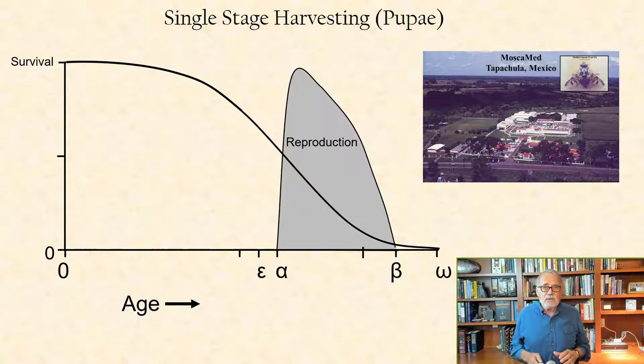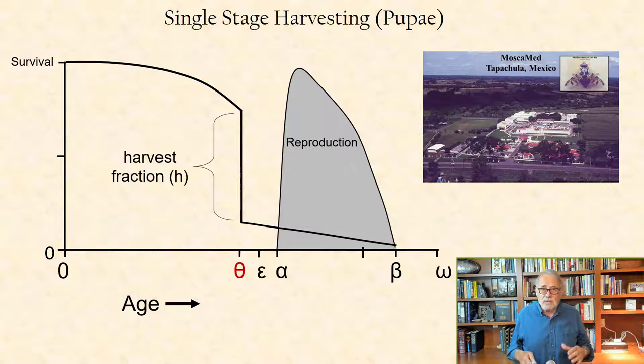These schedules are modified by designating age theta as the age at which the cohort is harvested at rate H, and age delta denoting the discard age of the adults. This is typically when females are passed through prime reproductive ages.